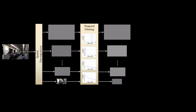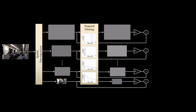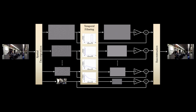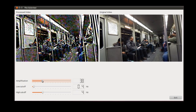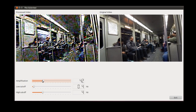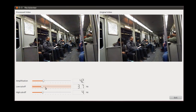We extract temporal variations in a band of frequencies. For example, for a pulse visualization application, we would extract frequencies around 1 Hz, which is the typical adult pulse at rest. We then amplify these variations and recombine the video. The computation is cheap and can be performed in real-time, as demonstrated here. The user has a number of sliders to choose the frequency band and the amplification factor.